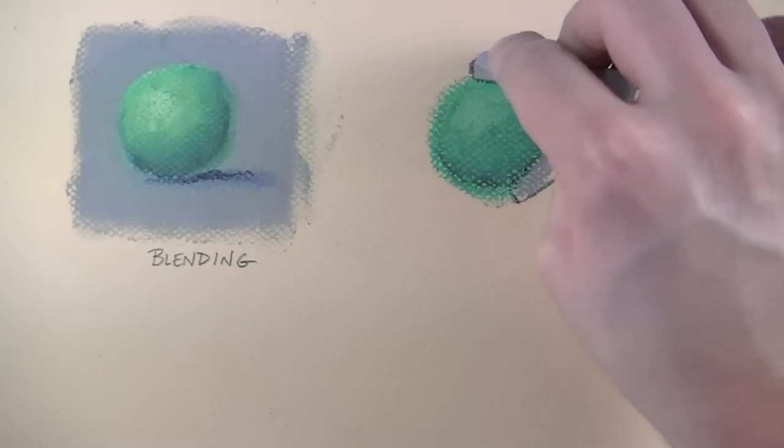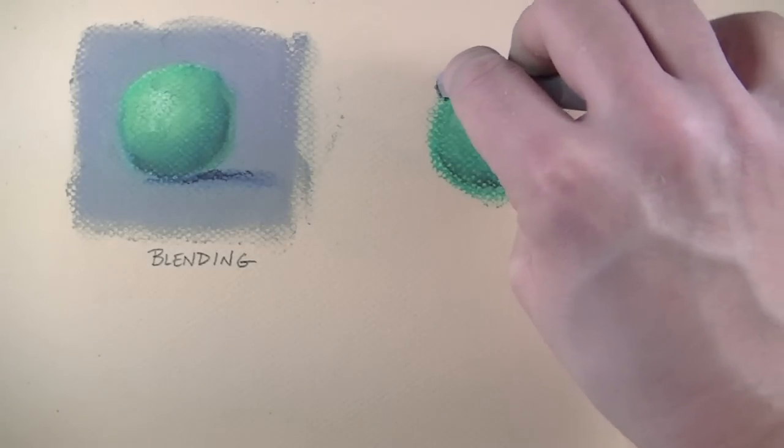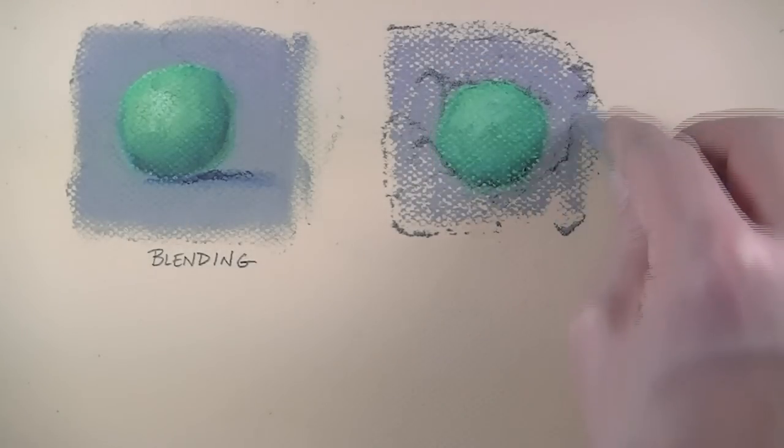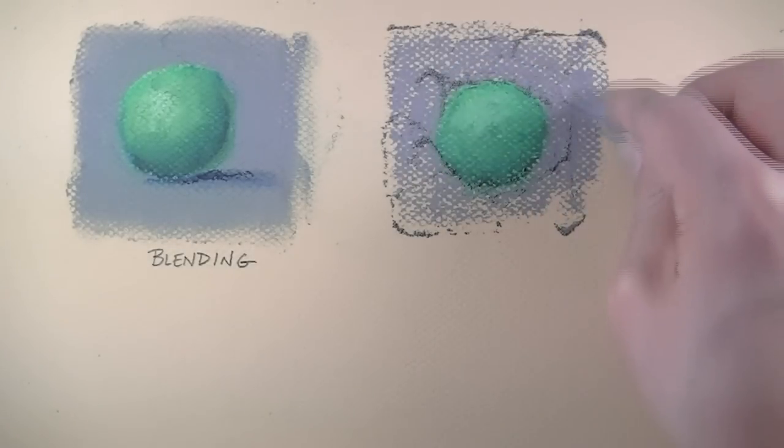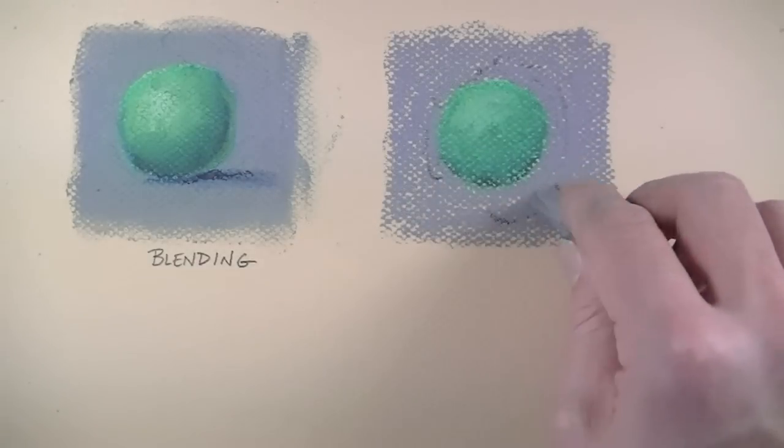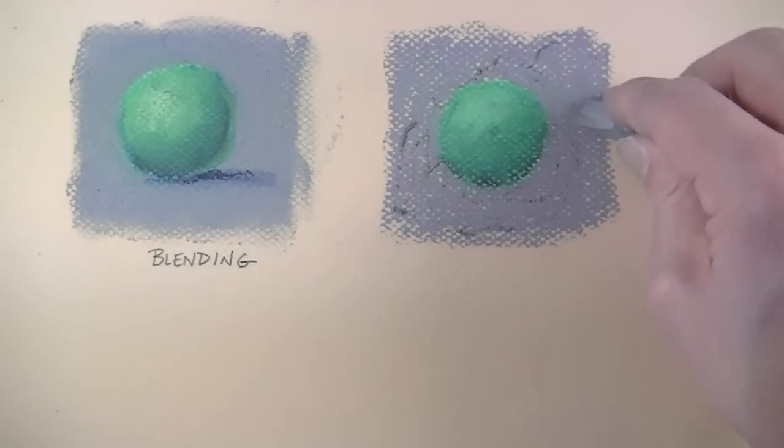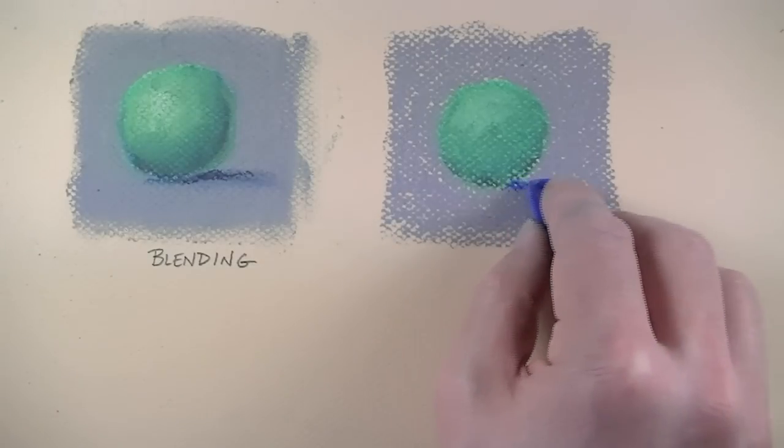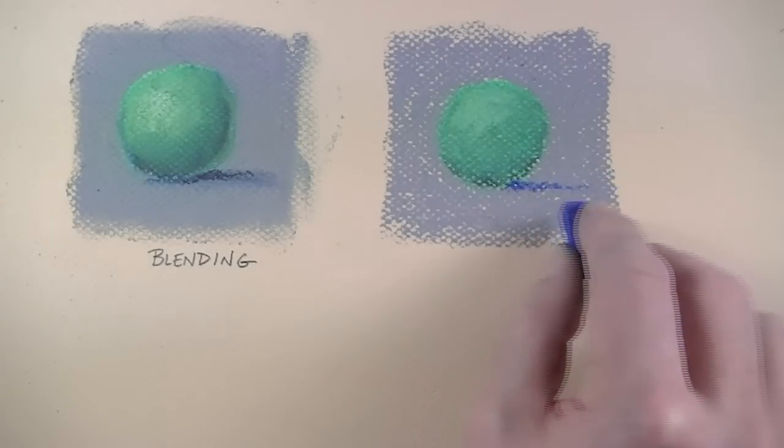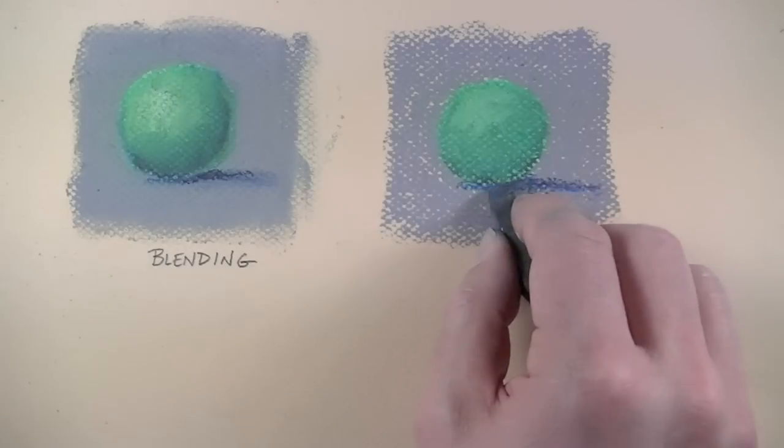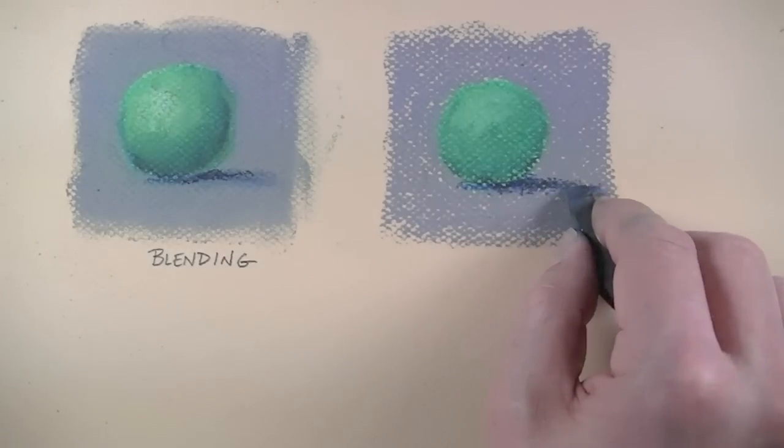Again we'll establish the edges of the sphere after the sphere is drawn using a medium gray. To stay consistent with the application of scumbling we will not blend in the background here either. To create cast shadow we'll layer the dark blue over the top of the gray and then again this application is followed by dark gray.